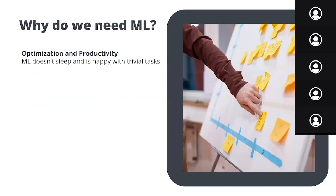So why do we need machine learning at all? Machine learning has proven to optimize because it lives inside a computer, and computers don't have the basic needs of human beings. Furthermore, computers are generally faster at concluding than humans are — for example with mathematics, which machine learning is built upon.